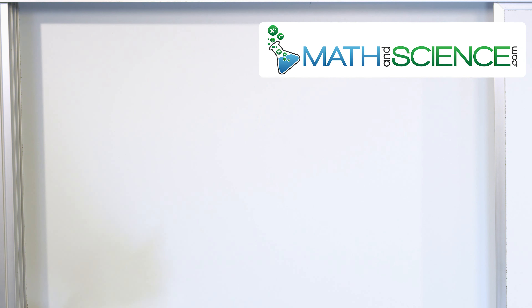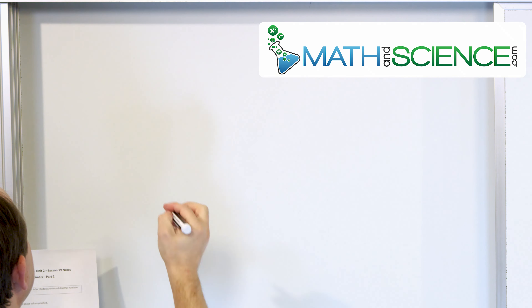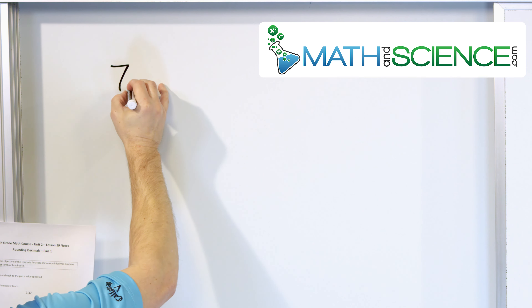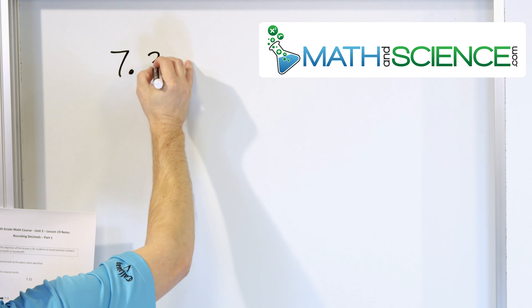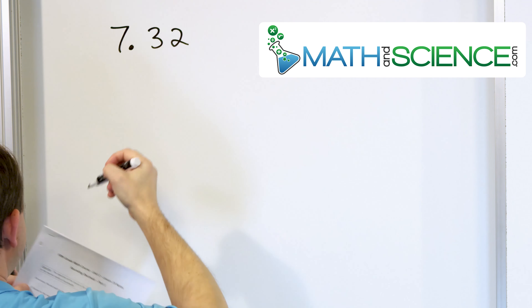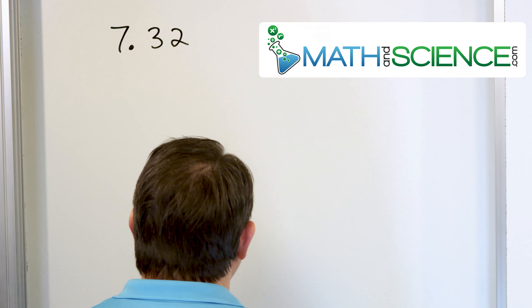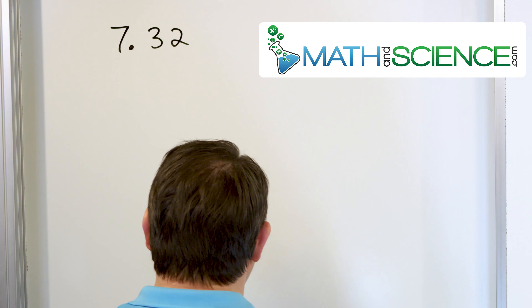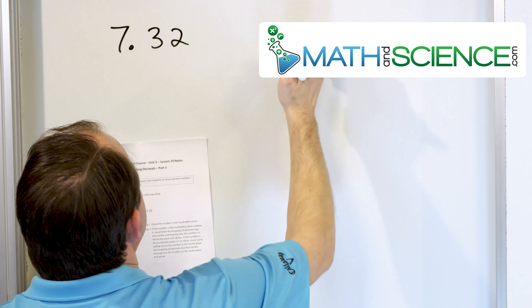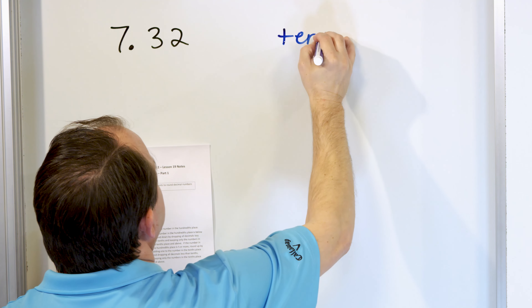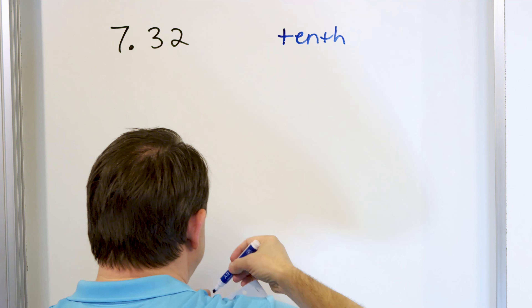The easiest way to do it is just to jump into it. Let's take a look at the number 7.32, and what we want to do is round this to the nearest tenth.